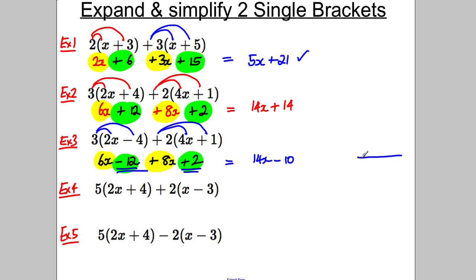But negative 12 add 2 is actually negative 10. Why? Well, if you're at negative 12 on the number line, there's 0. And you add 2, you go 2 spaces to the right, you get to negative 10. So the answer is 14x subtract 10.